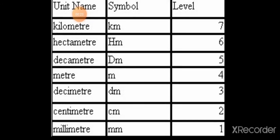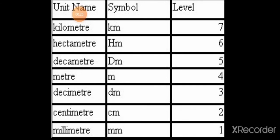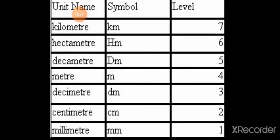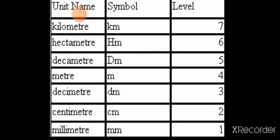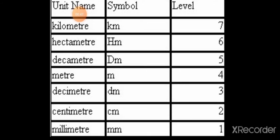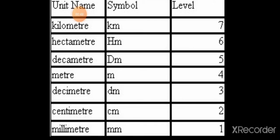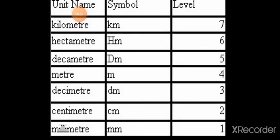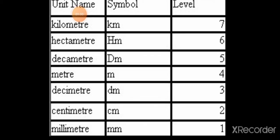Level One: symbol mm, unit name millimeter. Next, Level Two: symbol cm, unit name centimeter. Next, Level Three: symbol dm, unit name decimeter.